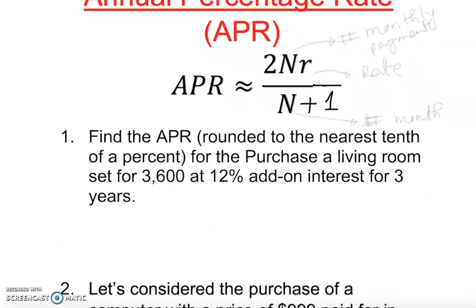Let's solve this APR problem. Find the APR rounded to the nearest tenth of a percent for the purchase of a living room set for $3,600 at 12% add-on interest for 3 years.